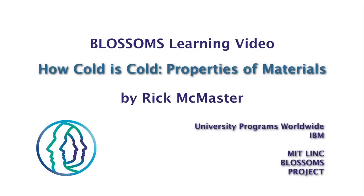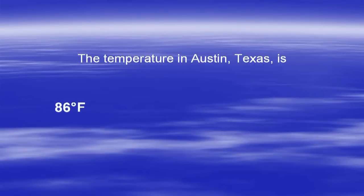Hi, it's Rick McMaster again. Welcome to part two of How Cold is Cold. This time, we'll take a look at some material properties at lower temperatures. We'll start outside at our IBM campus in Austin, Texas. Today, it's about 86 degrees Fahrenheit, or 30 degrees Celsius, or 303 Kelvin.